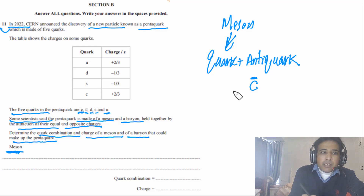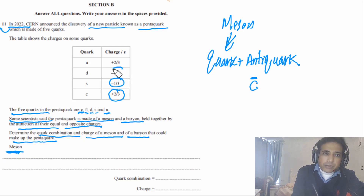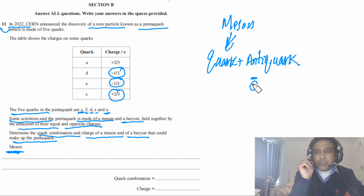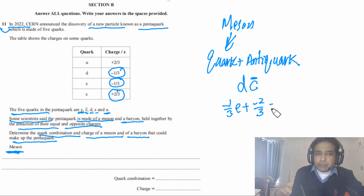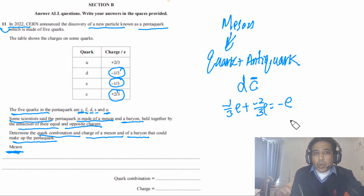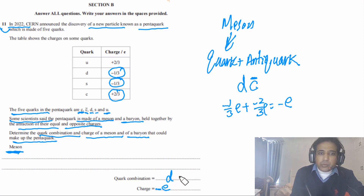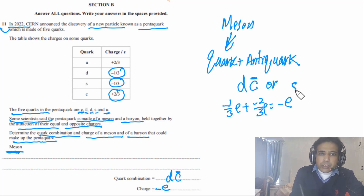So we have to take the Anti-Charm quark — this must be included. The second one we can take is either the Strange quark or the Down quark. If we take the Down quark, the charge on it is minus 1/3 e, and the charge on the Anti-Charm quark is minus 2/3 e. So the total charge will be equal to minus e, or simply minus 1. The quark composition is Down quark and Anti-Charm quark. Alternatively, it can be Strange quark and Anti-Charm quark — this is another possible composition.